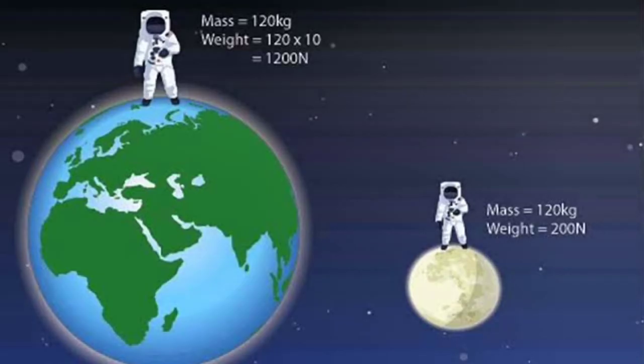For example, in this picture you can see a person on Earth whose mass is 120 kilograms and weight is 1200 Newtons. Because we multiply mass times gravitational force: 120 times 10 equals 1200.